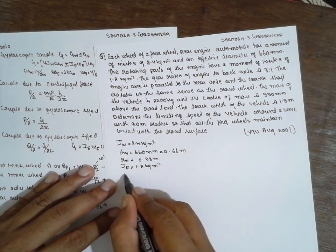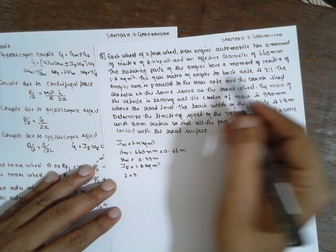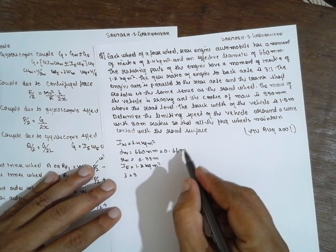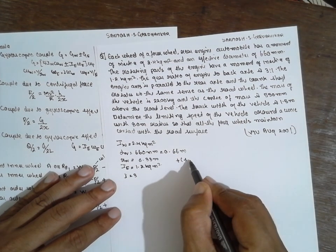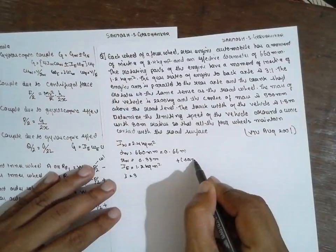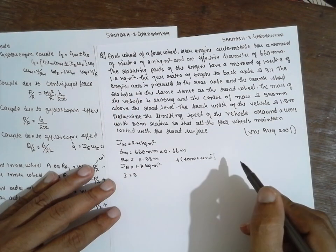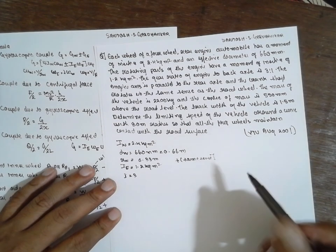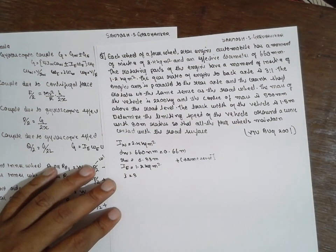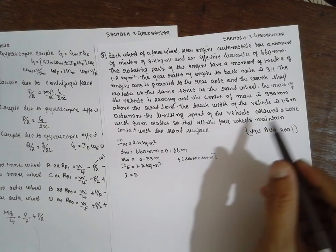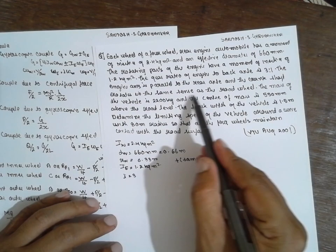The engine axis is parallel to the rear axle of the crankshaft and rotates in the same sense as the road wheels. Same sense means positive — you have to treat it as positive.